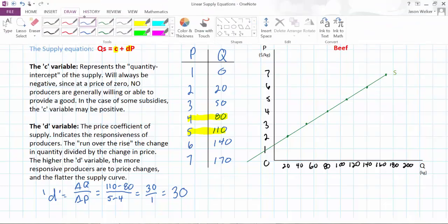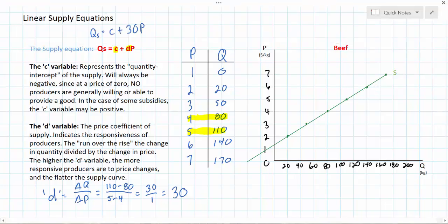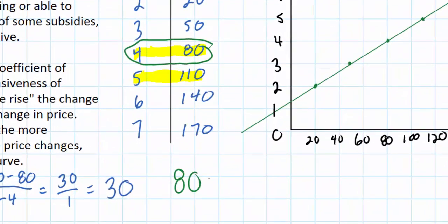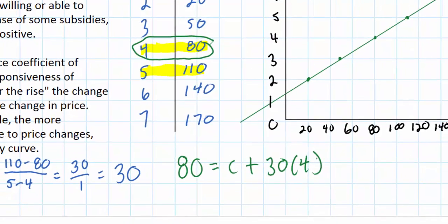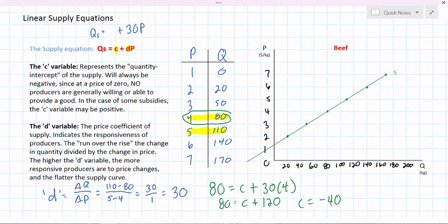To do this, all I need to do is plug in a price and quantity combination from my supply schedule into the equation I currently have. I'll use this combination: when the quantity supplied is 80, the price is $4. So I plug in 4 and 80 into my supply equation and solve for C. I know that 80 equals C plus 120, therefore C equals 80 minus 120, which is negative 40.